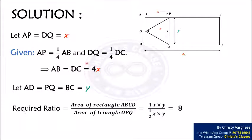Solution. Let AP equal to DQ be denoted by X. It is given that AP is equal to 1/4 of AB and DQ is equal to 1/4 of DC. From this we can say that AB and DC equals 4 times X. Let AD, PQ, and BC be denoted by Y.